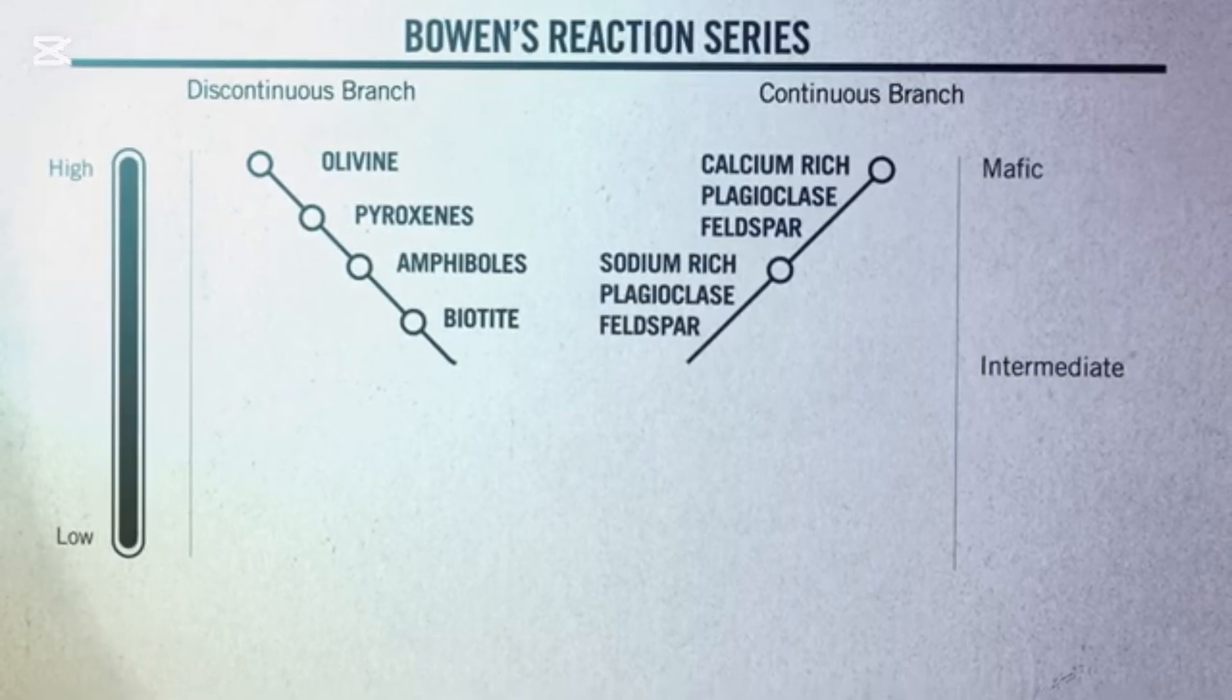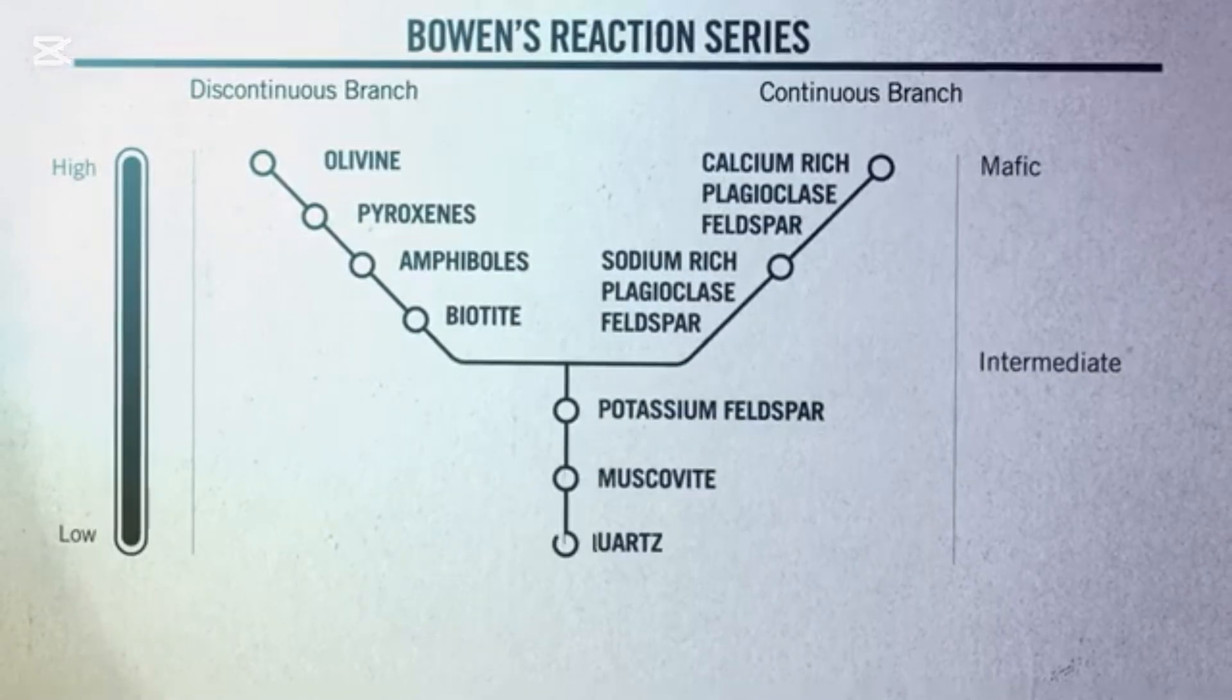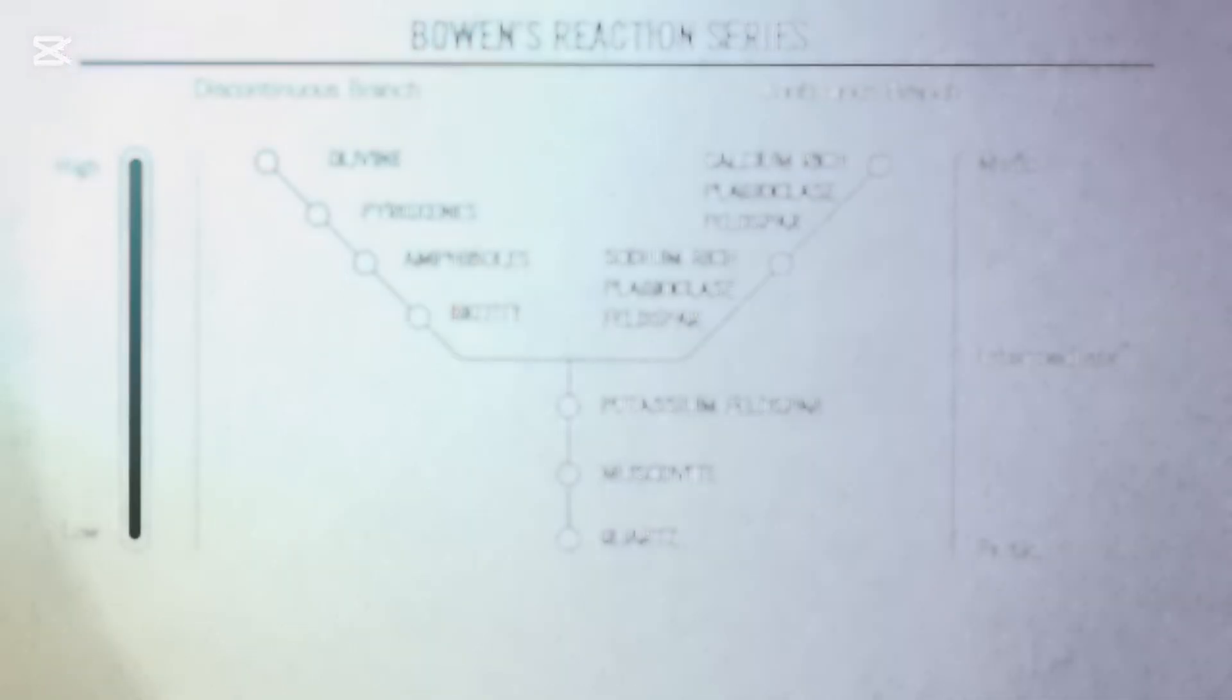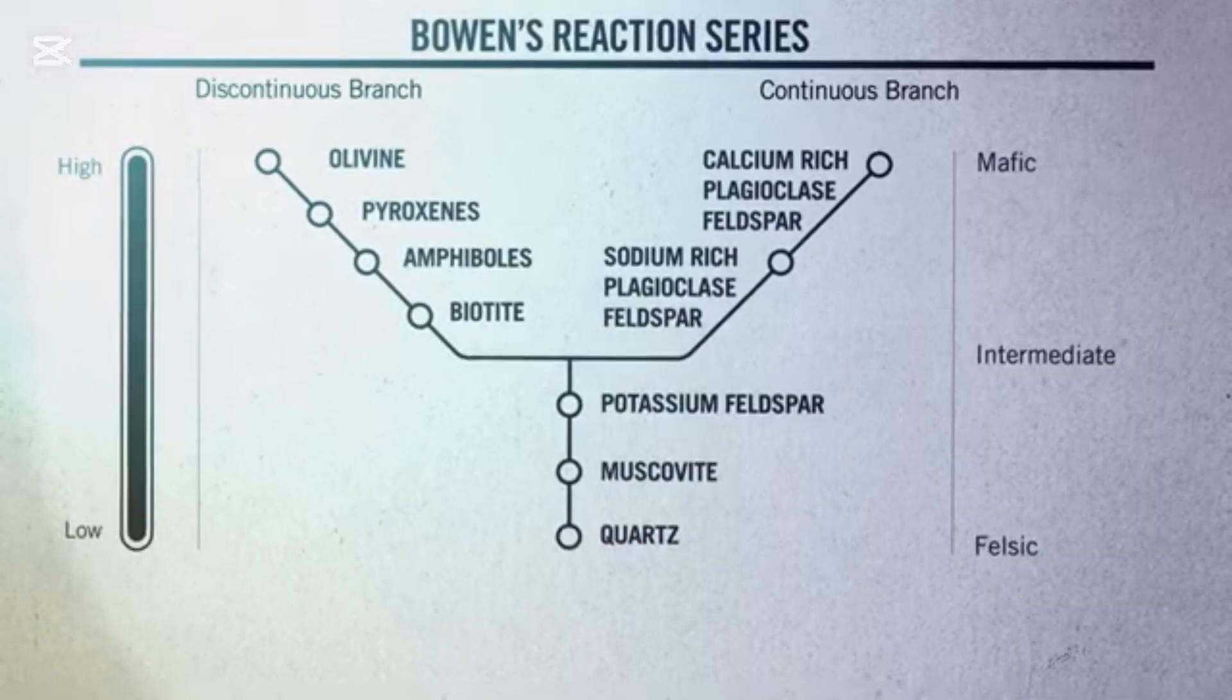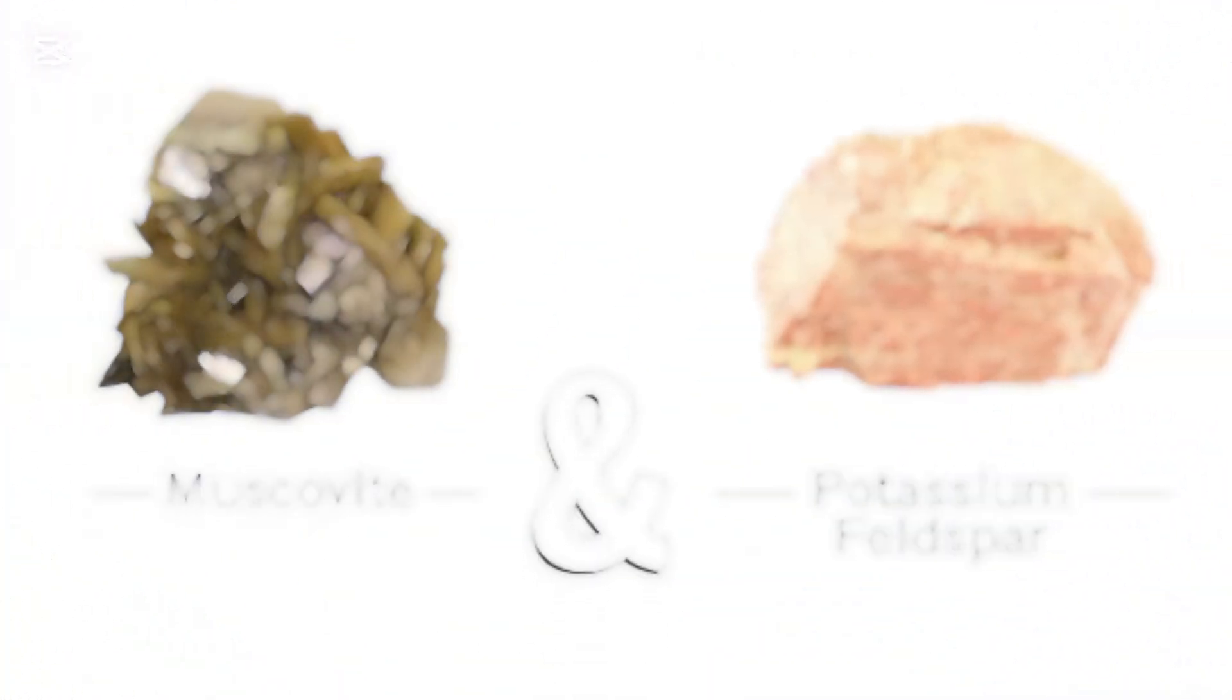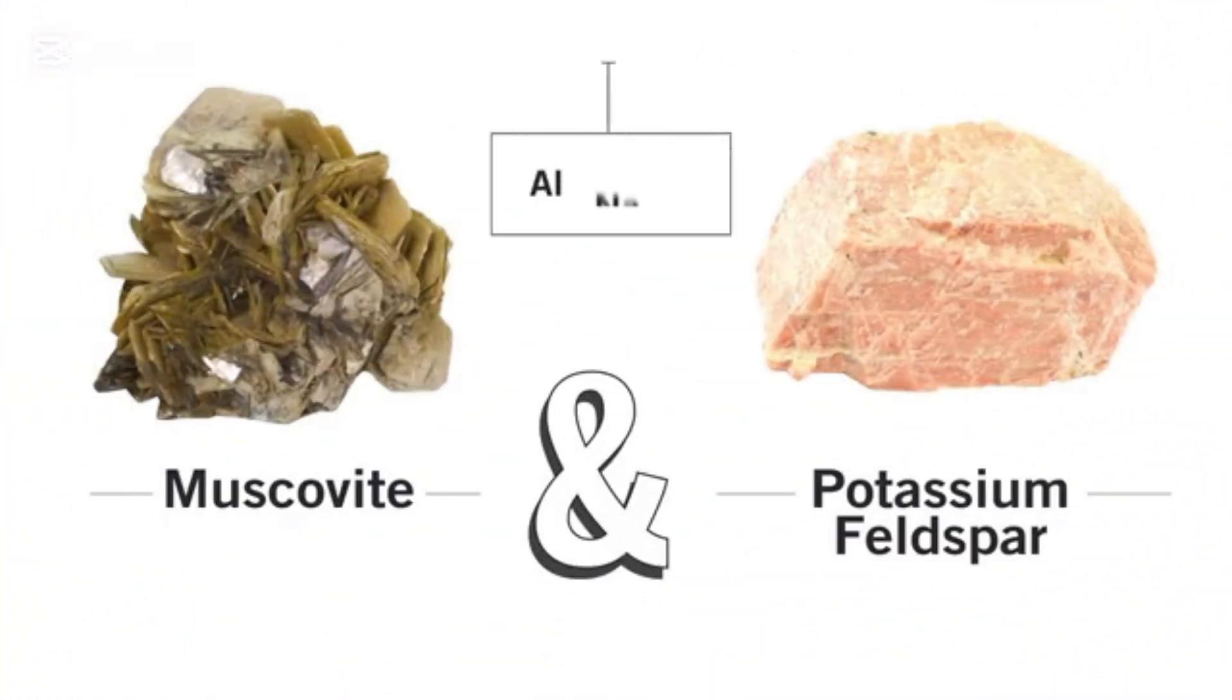At cooler temperatures, the discontinuous branch and the continuous branch merge, and the minerals that form become more felsic. That means that they have less iron and magnesium in them, and more lighter elements, such as aluminum and potassium. The formation of muscovite and potassium feldspar uses up most of the remaining aluminum, sodium, and potassium from the melt.